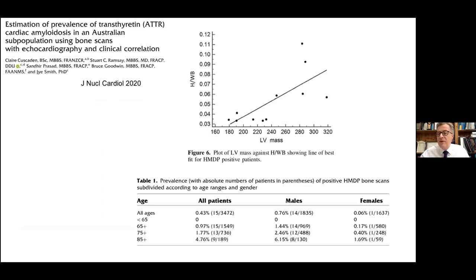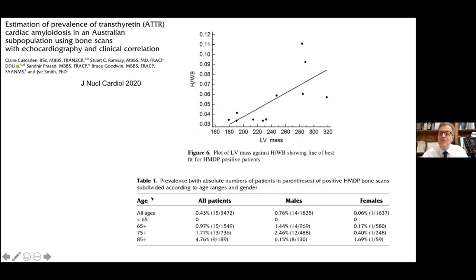This is very topical for me — I've been trying to defend Tafamidis at a NICE hearing. If you look at incidental findings in people having bone scans, a recent Australian study shows maybe 4% to 5% of individuals above the age of 85 have a positive scan. Is that disease? Well, they certainly have thicker hearts, so it probably is.